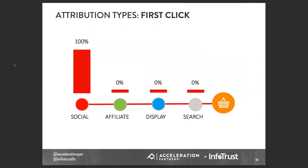So what are the different types of attribution? First is first click. A customer maybe browsed and saw a Facebook ad for a beauty product, clicked on it, went to your site, then decided not to buy. Later she goes to one of your affiliate partners, clicks through, sees a display ad, and then finally Googles what she wants to buy. In this situation, 100% of the credit goes to the influencer — the opener — which would have been social. All other channels get no credit for that sale.